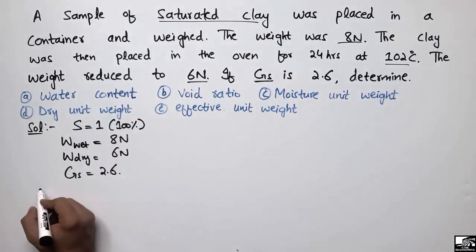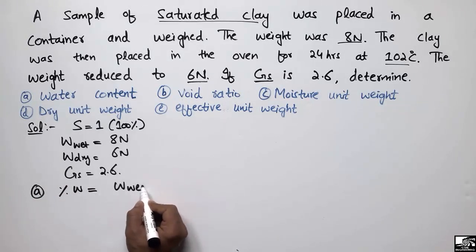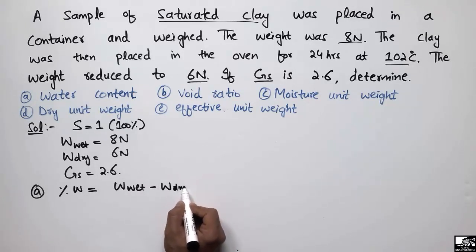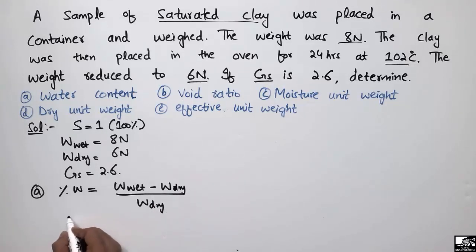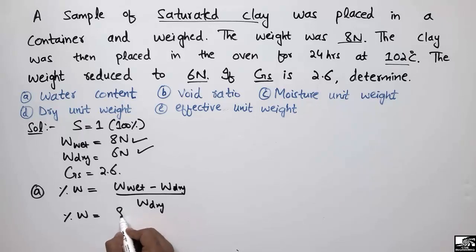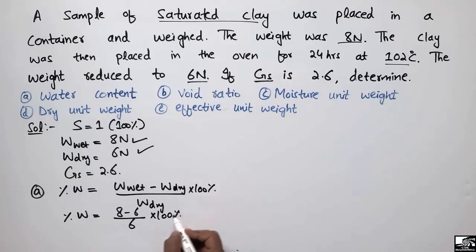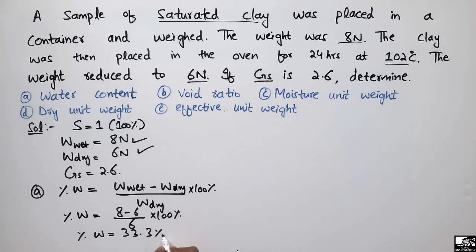The first unknown is water content. It is equal to the weight of the clay minus the dry weight, divided by the dry weight. The water content equals 8 minus 6, divided by 6, multiplied by 100 percent. After solving this equation, water content comes out to be 33.3 percent.